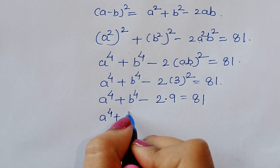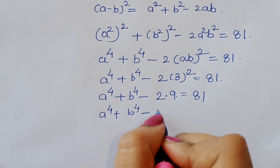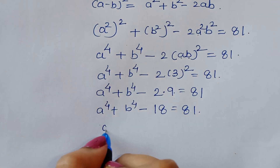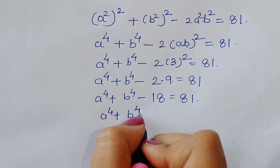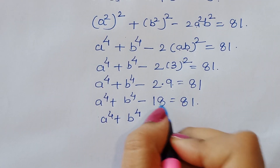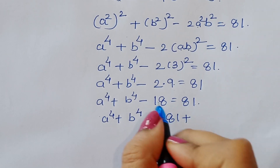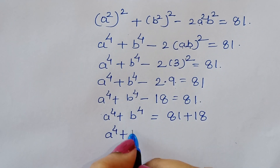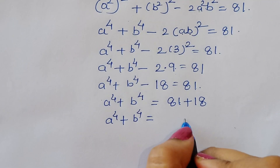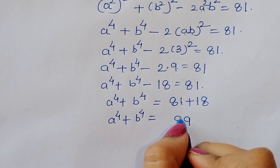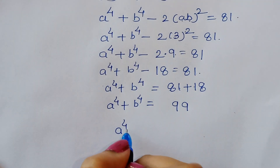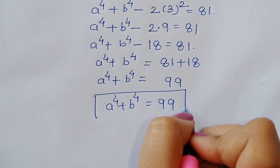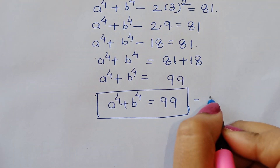Therefore, a to the power 4 plus b to the power 4 minus 2 times 9 equals 81. That gives a to the power 4 plus b to the power 4 minus 18 equals 81. So a to the power 4 plus b to the power 4 is equal to 99. This is equation 2.